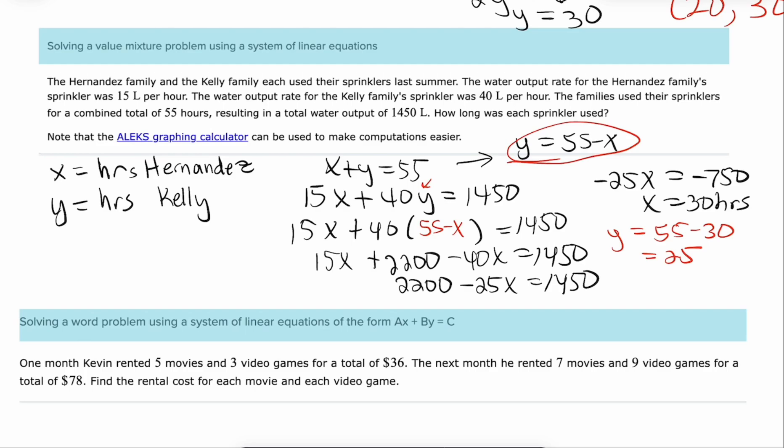And so what do we know? Well the Hernandez sprinkler ran for 30 hours and the Kelly sprinkler ran for 25 hours. That is a total of 55 hours. You could multiply by each of their respective rates and then you should get 1450. So that is a problem where you saw substitution work pretty good.